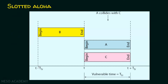Let's see it with an example. Assume there are two time slots: time slot one and time slot two. Station B places its frame here, and stations A and C place their frames here. The sending process can happen only at the beginning of the time slot. In pure aloha, any time it can send — here, here, or here. Whereas in slotted aloha, frame A and frame C are placed at the beginning of the same time slot, so A collides with C. There is nothing like the beginning of A colliding with the ending of C. The vulnerable time here is the frame transmission time, because if two frames collide, they are in the same time slot.